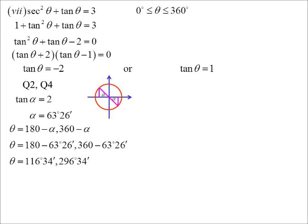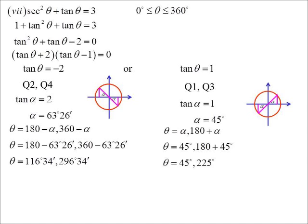Now we look at our other possibility. Tan theta is 1, which is positive. So first and third. 45 degrees for our acute. 45 and 225. We don't leave it like that. We have to write a final solution down. So we rewrite them all. I think it makes sense to put them in numerical order myself. So 45, 116 degrees 34 and so on.